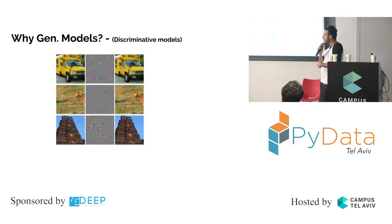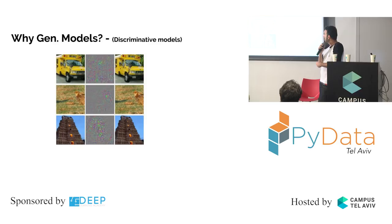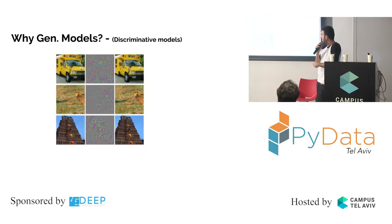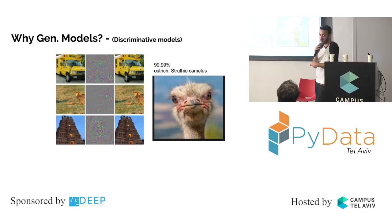Here is the example from that paper. We all see a school bus here, and the same school bus on the right — same image in our eyes. But the right image is the left image plus some calculated noise. By the end of this lecture, you'll know how to calculate that specific noise. The network thinks the left is a school bus, but classifies the right as ostrich — 99.99% ostrich. This is ridiculous.